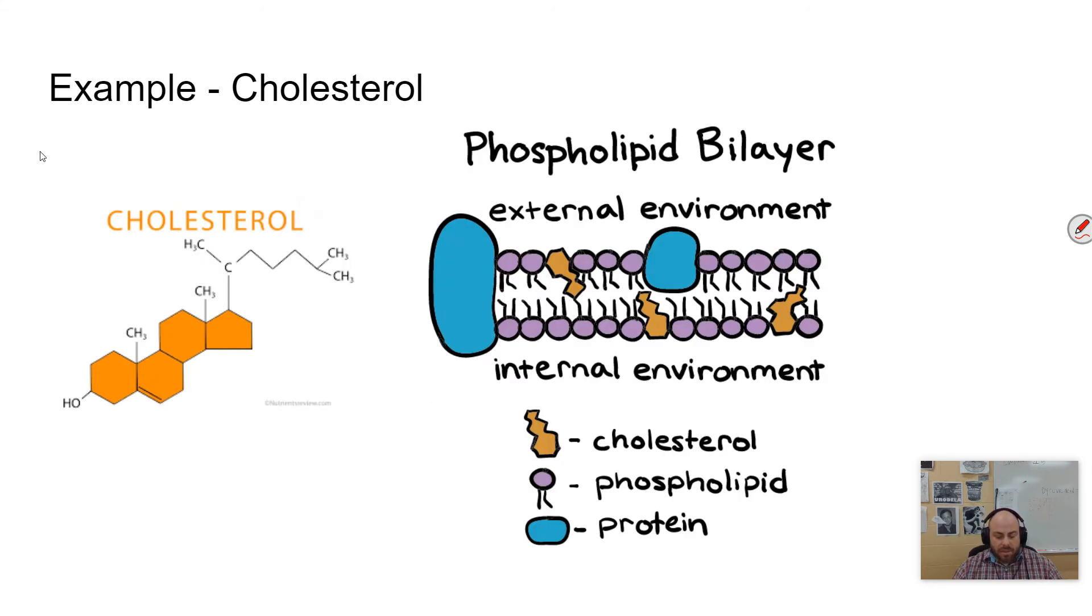Something similar with animals in cell membrane cholesterol. Animal cells contain cholesterol while plant cells do not. And cholesterol helps the membrane to maintain fluidity during adverse temperatures. During high temperatures, it's able to stabilize the membrane structure. And it's able to maintain fluidity at low temperatures as opposed to freezing.